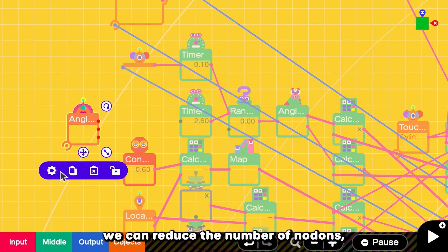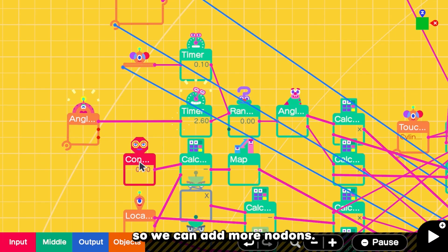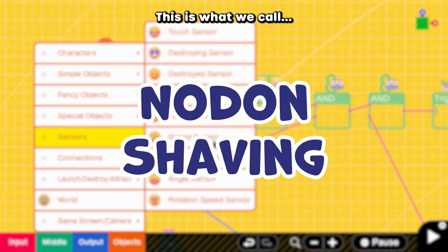Luckily, we can reduce the number of nodons so we can add more nodons. This is what we call nodon shaping.